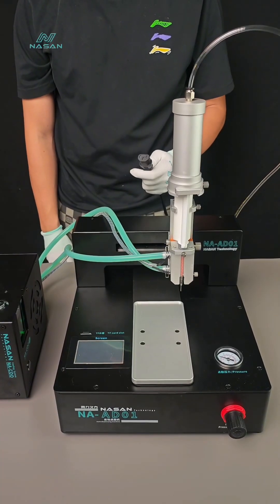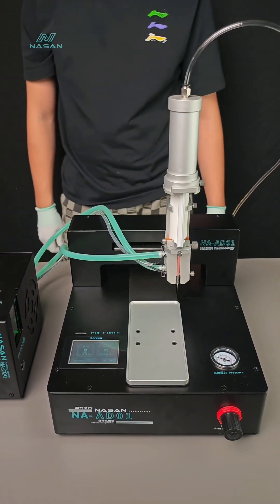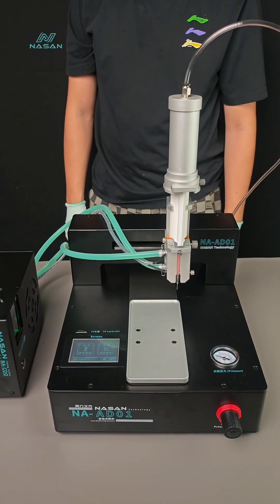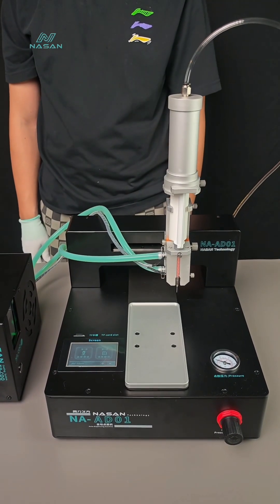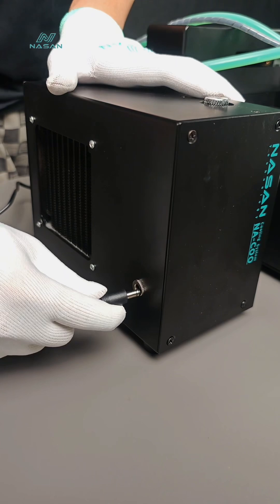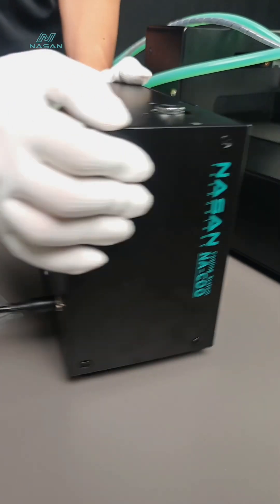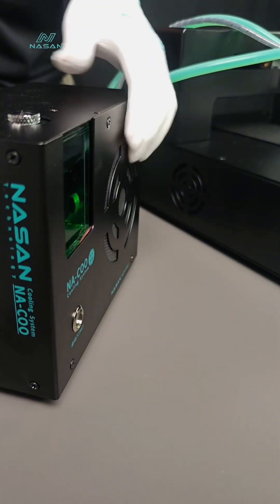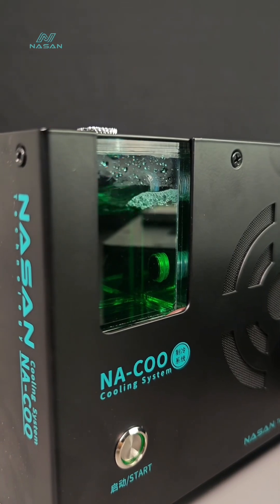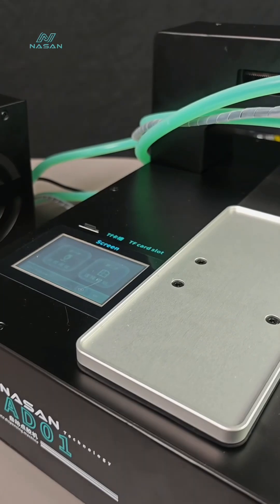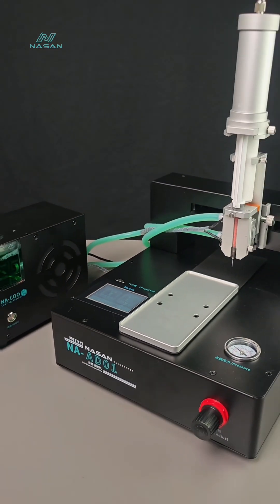Now let's connect the power to the machine and cooling system. When we turn on the machine, you will hear the pumping sound. That is normal, no worry. Connect the cable to the cooling system. Add coolant from the top and click start. The machine is well installed now.